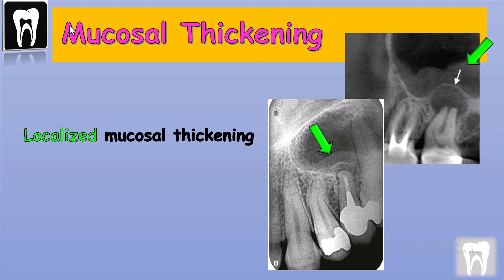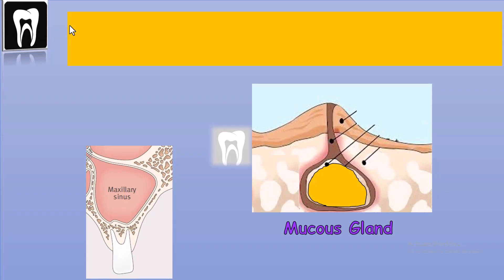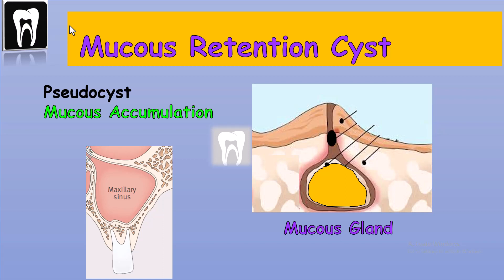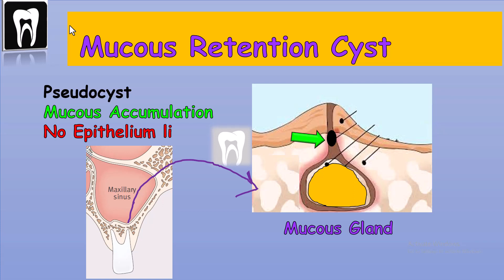Mucous retention cyst, also known as retention pseudocyst, occurs when there is mucous accumulation due to obstruction of the mucous gland duct inside the membrane of the sinus. We call it a pseudocyst because there is no epithelium lining — something we discuss in pathology and examine under the microscope.